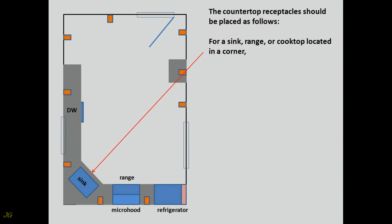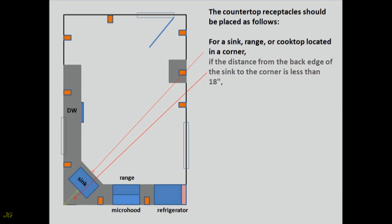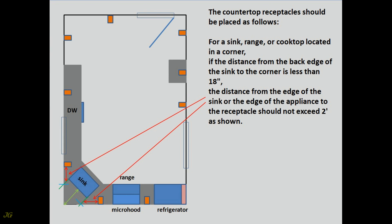For a sink, range, or cooktop located in a corner: if the distance from the back edge of the sink to the corner is less than 18 inches, the distance from the edge of the sink or appliance to the receptacle should not exceed 2 feet.